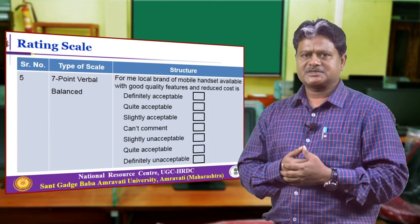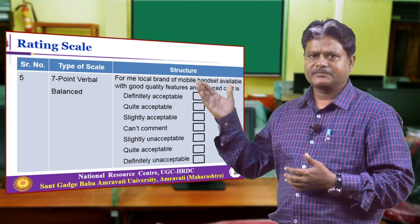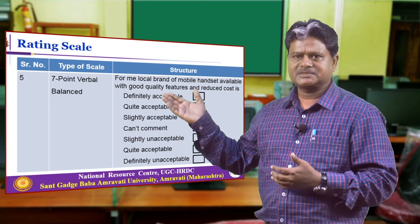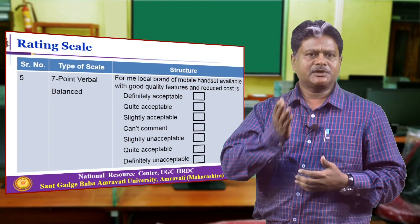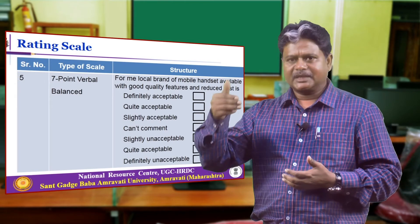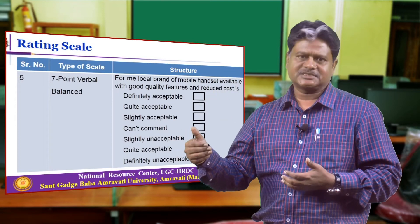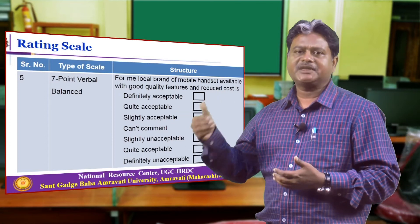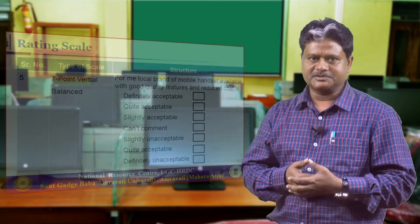If you want another variation, we can balance this particular scale by including some neutral points in between the scale options. In this case, the first three options are positively oriented about that particular object, the fourth option is neutral, and the fifth, sixth, and seventh options are talking about the negativity of an individual towards that particular object.